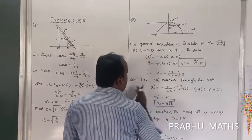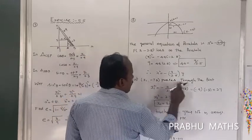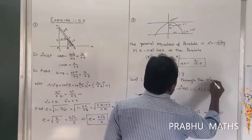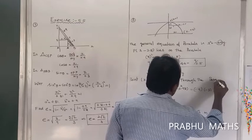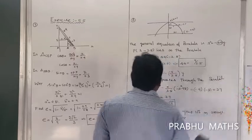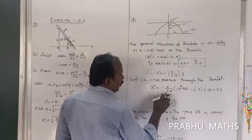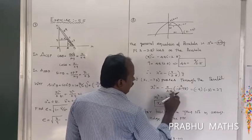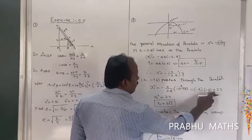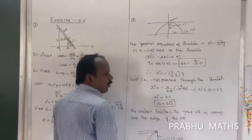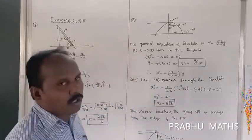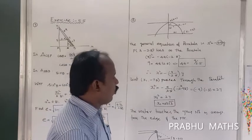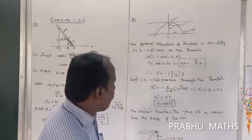The point (x1, -7.5) passes through the parabola. Substituting y1 = -7.5 into x1² = -(9/2.5)(-7.5): x1² = 9/2.5 × 7.5. Simplifying: 7.5/2.5 = 3, so x1² = 27. Therefore x1 = 3√3. The water touches the ground 3√3 meters away from the edge of the pipe.